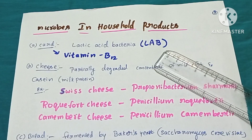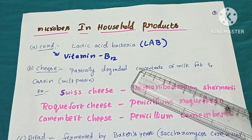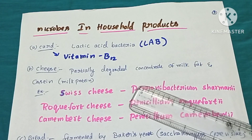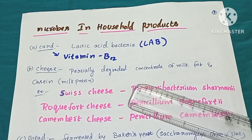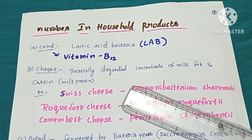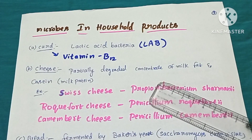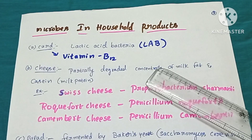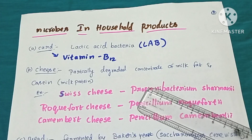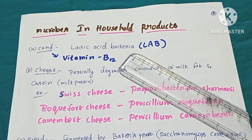The first concept is microbes in household products. Every day, we boil milk, cool it to a certain temperature, and then add some curd or buttermilk. This curd or buttermilk is the inoculum — in microbial terminology, inoculum refers to the bacteria or microorganisms added to initiate growth. That inoculum consists of millions of bacteria called Lactic Acid Bacteria, or Lactobacillus.